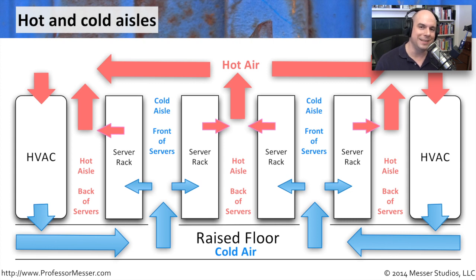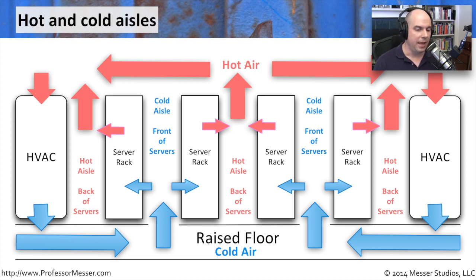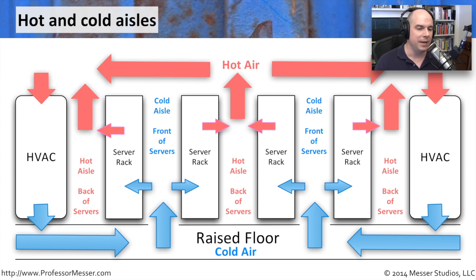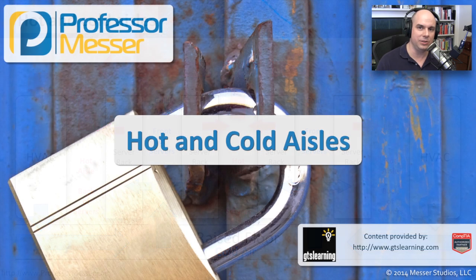So when we're designing this to be as optimal as possible, we'll have certain aisles that will be our cold aisles, where we're pulling all the air through. And then we'll have our hot aisles, where all the air has gone through our computer systems, been heated up, and now we're going to send it to the top of the building where we can recirculate it and make it cold again.